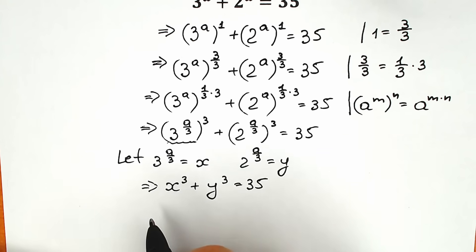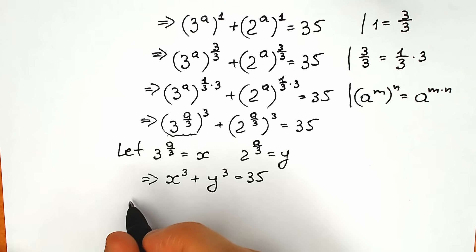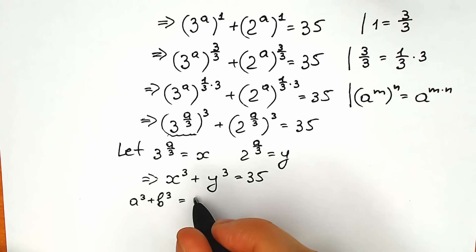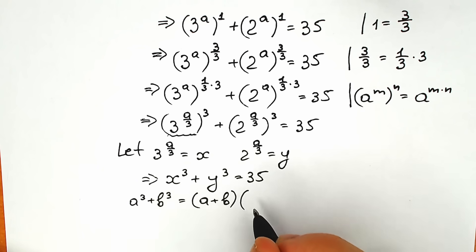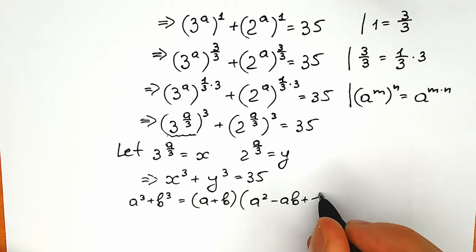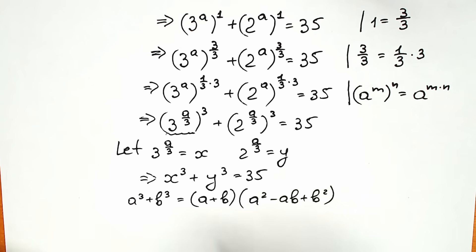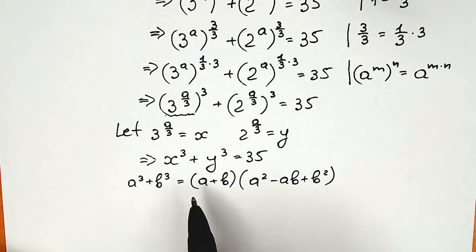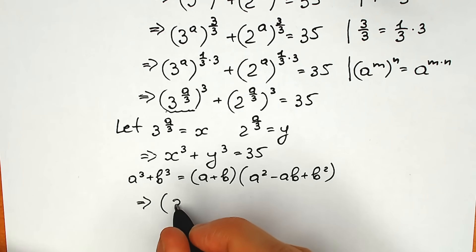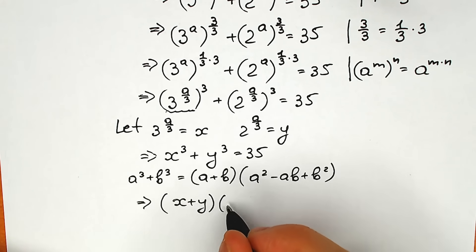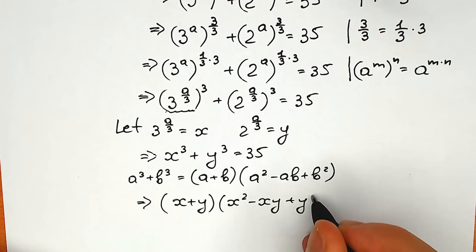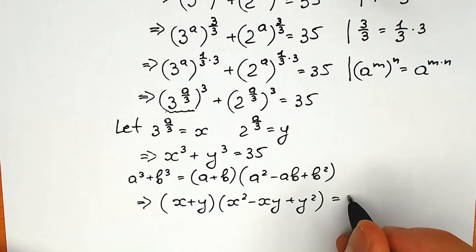According to the sum of two cubes formula: a cubed plus b cubed equals (a + b)(a squared minus ab plus b squared). Applying this with x and y, we get (x + y)(x squared minus xy plus y squared) equals 35.